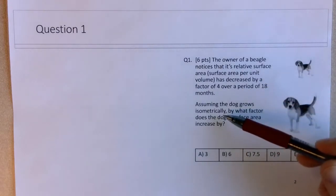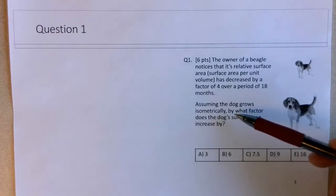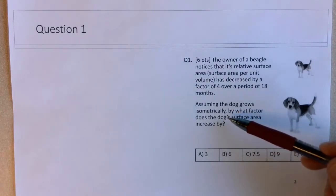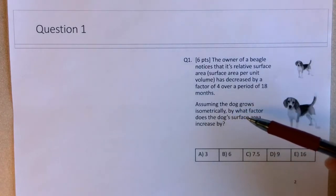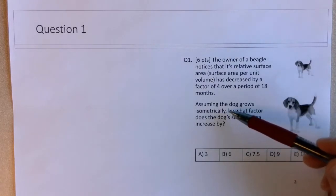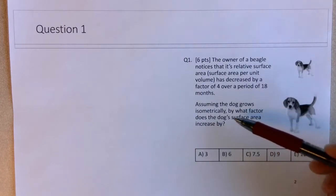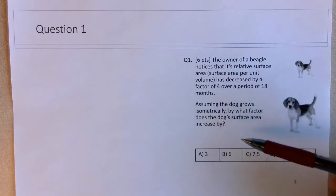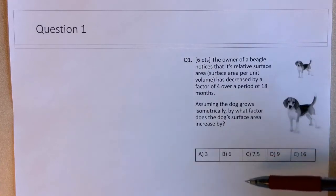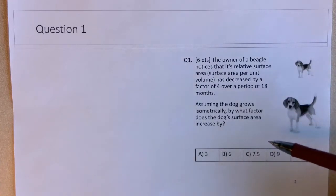And then we'll assume the dog grows isometrically, which is what we assume for all scaling problems, in that it's just easier to handle the math in that case, although this is not technically true. But this is what we'll assume, that the dog grows isometrically means that it grows by the same amount in each dimension, x, y, and z. So if it doubles its length, it doubles its width, it doubles its height. That's what isometric means.